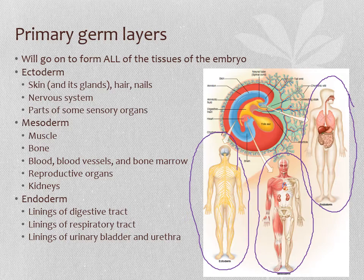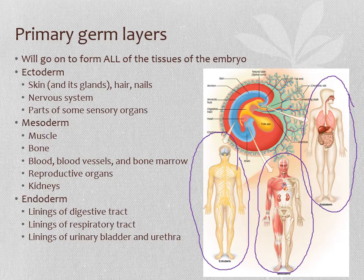It's interesting because if you think about it — ectoderm is the outer layer, that's your skin. Mesoderm is the middle layer, that's your muscle and bone, which is deep to your skin. And then your innermost layer is your guts — the endoderm. We're really just a tube within a tube within a tube.